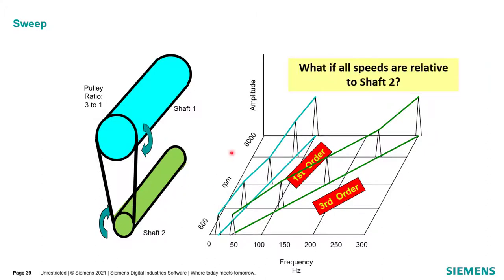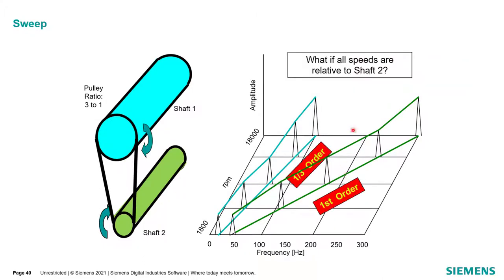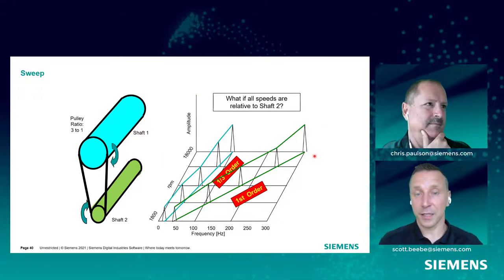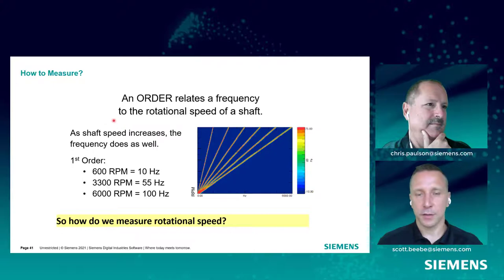Quick question — what would happen if I happened to be tracking the other shaft? Great question. If tracking relative to shaft two, how many rotations of shaft one would we have per rotation of shaft two? It would be one-third. So in that case, the naming changes: shaft two becomes first order because that's now our tracking shaft, and shaft one would be one-third order. The order always depends on which shaft is the reference.